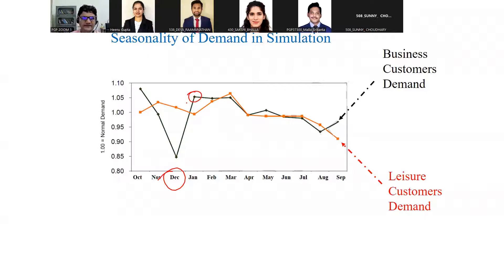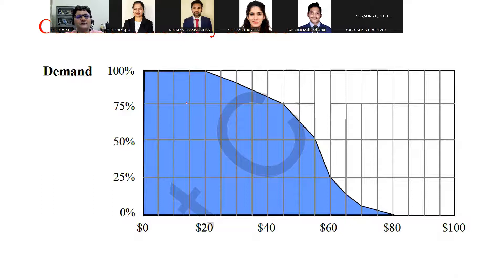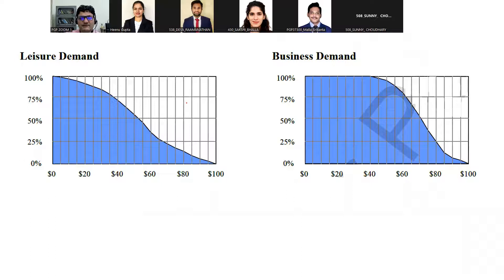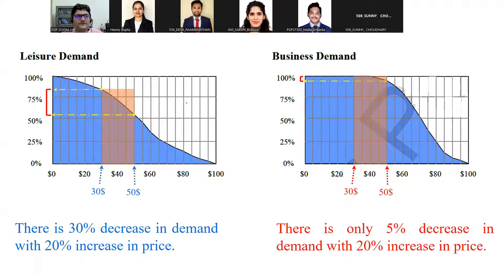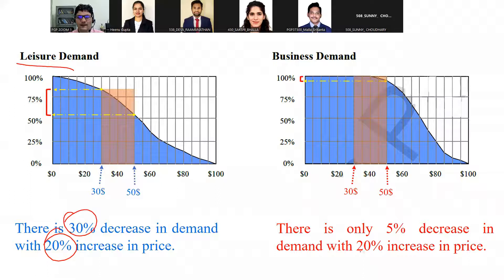The customer sensitivity to price is also very interesting in this simulation. If I increase the price from $30 to $50 — a 20% increase — the decrease in demand for leisure customers is 30%. But for business customers, a 20% increase in price results in only a 5% decrease in demand. This shows that leisure customers are significantly more price sensitive than business customers.